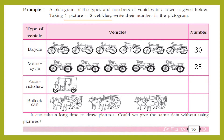Next is auto rickshaw. Only one pictogram is given, so we multiply five into one — that is five auto rickshaws. Now for bullock carts, count and tell me. Very good — it is three. Three pictures represents three into five, which is fifteen bullock carts.